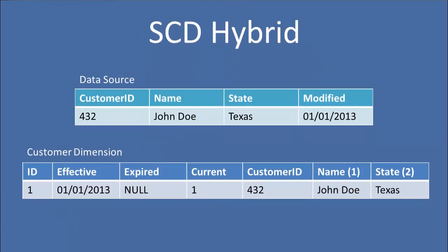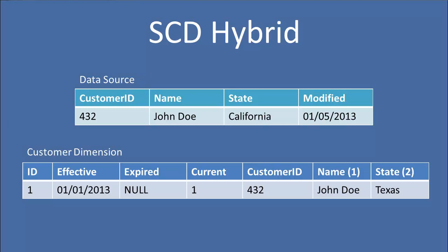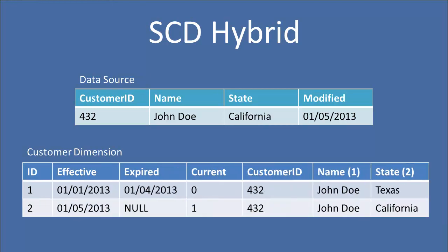Let's see how the hybrid dimension actually works. In this example, we're tracking name as an SCD type 1 and state as an SCD type 2. Starting out, we have John Doe in Texas. The source system changes — now we have John Doe in California. State is tracked via SCD type 2, so we need to know we had a Texas version and a California version of that attribute. So we expire the original and create a new record — that's standard type 2 behavior. Now the name changes to Jane Doe. Since name is tracked on an SCD type 1 basis, we update all versions of that customer ID to show Jane Doe for the name value.